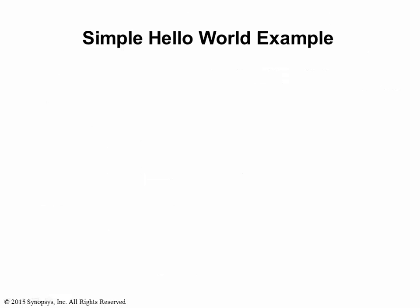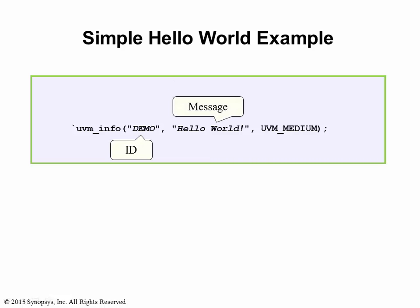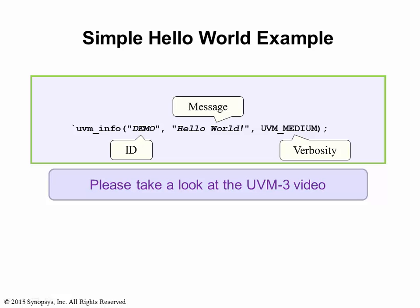In UVM, user messages are issued by using a macro called `uvm_info. The first argument of the macro is what's called an ID field. The second argument is the message that you want to print — in this case, Hello World. The third argument is the verbosity of the message. The purpose of the ID and verbosity fields are explained in the UVM3 video. For this basic UVM discussion, we'll concentrate on just the message.